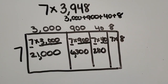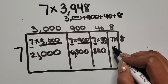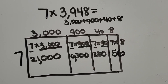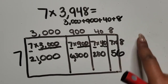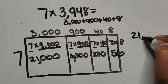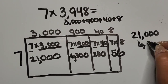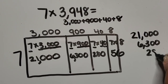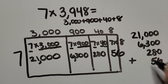Seven times eight is 56. Now we're going to have students take their partial products and add them together on the side. I'm going to line them up based on place value and then add them together.